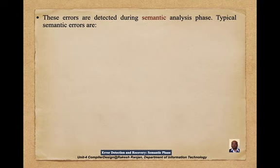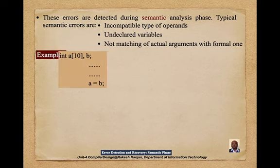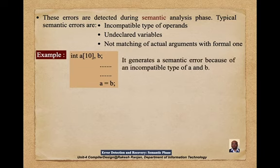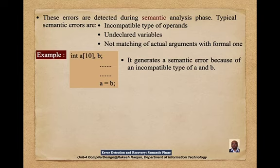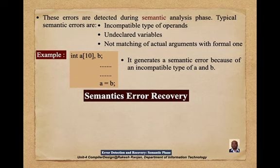Typical semantic errors are incompatible types of operands, undeclared variables, and mismatch of actual arguments with formal parameters. For example, writing int a[10], b; and then assigning a = b generates a semantic error due to incompatible types. Here, a is an array interpreted as a pointer, and the address of a cannot be changed, so assigning b to it will show an incompatible type error.